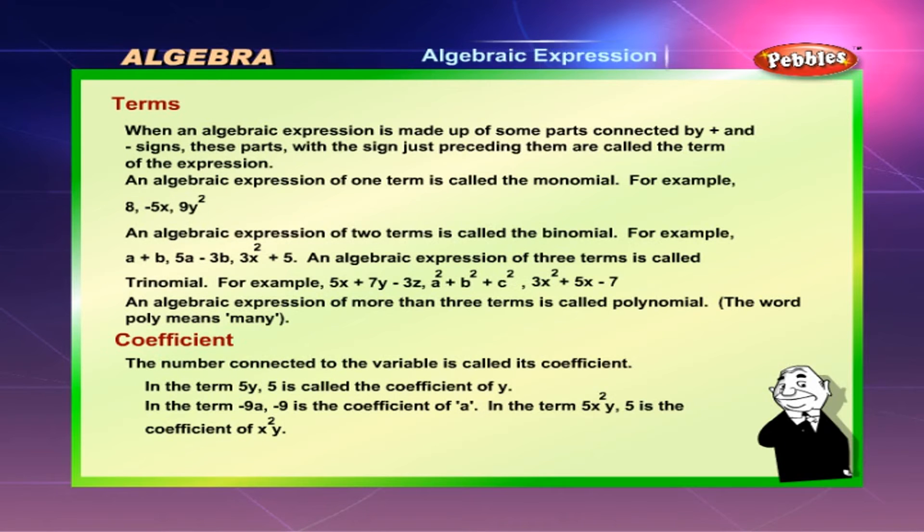When an algebraic expression is made up of parts connected by + and - signs, these parts with the sign just preceding them are called the terms of the expression. An algebraic expression of one term is called a monomial.